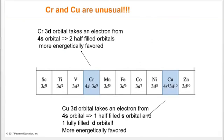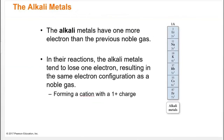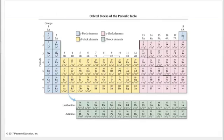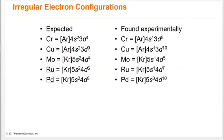We have noble gas configuration as a way to abbreviate electron configurations. For example, for tungsten you don't want to write out every orbital. Instead, go backwards to the nearest noble gas — xenon — write it in brackets, then continue: [Xe] 6s2, 5d1, 4f14, and fill up to 5d4 for tungsten. This abbreviated notation — [Ar], [Kr], etc. — is valid for every element.